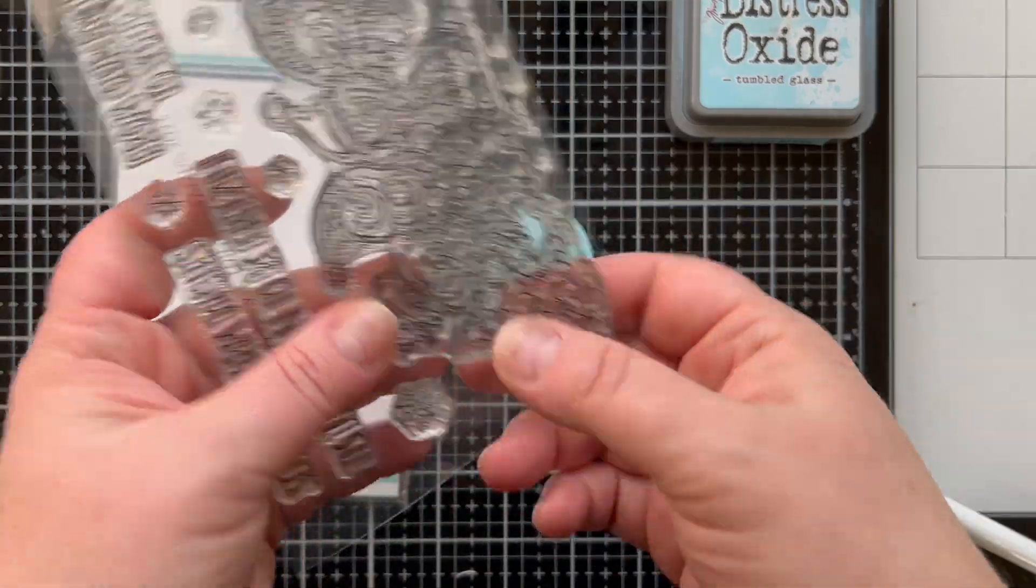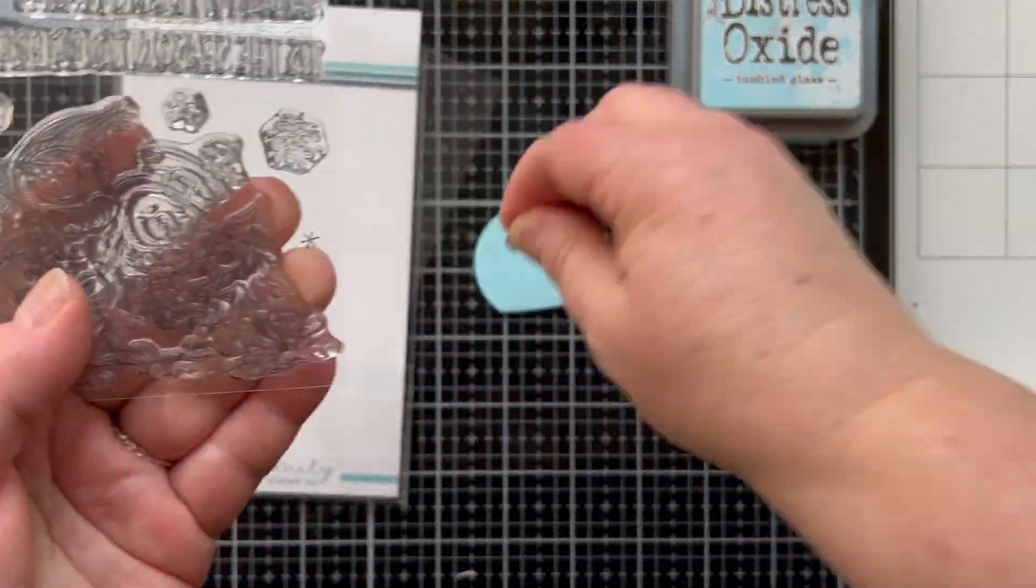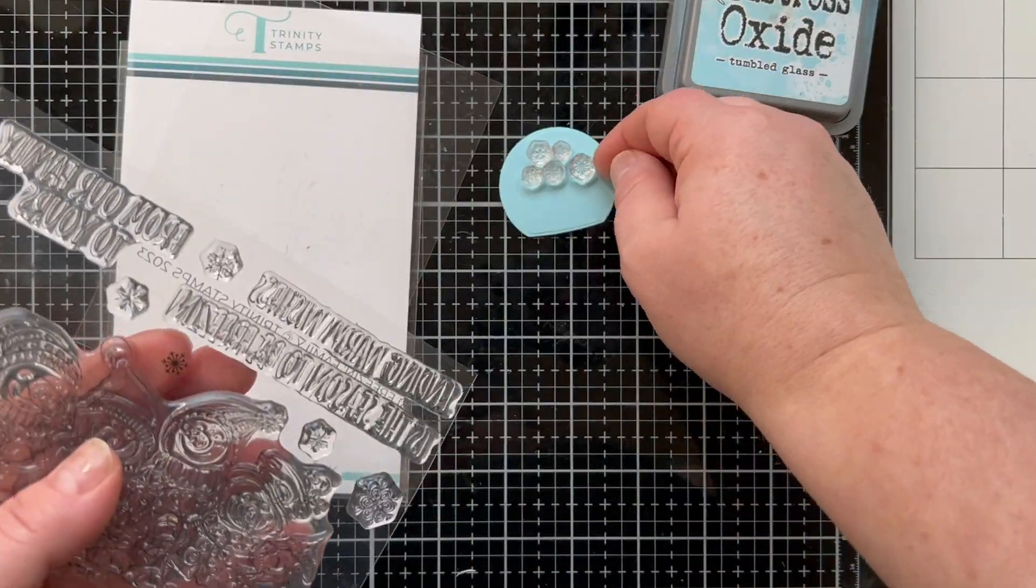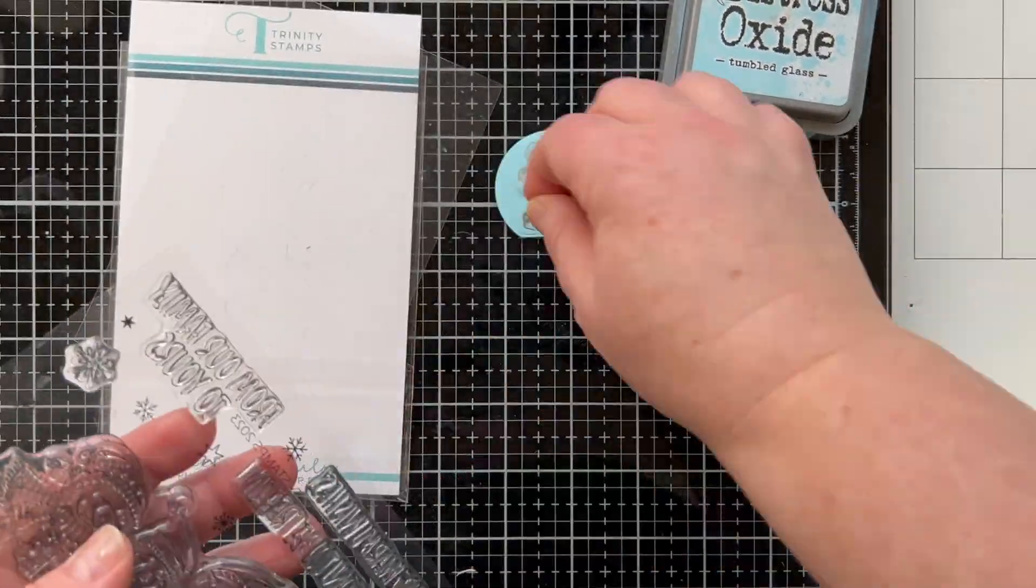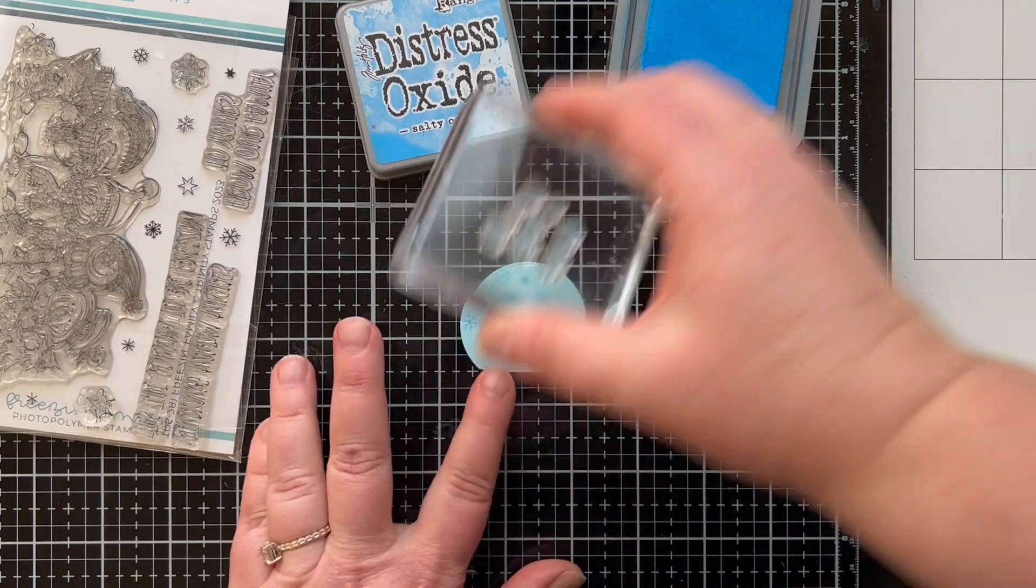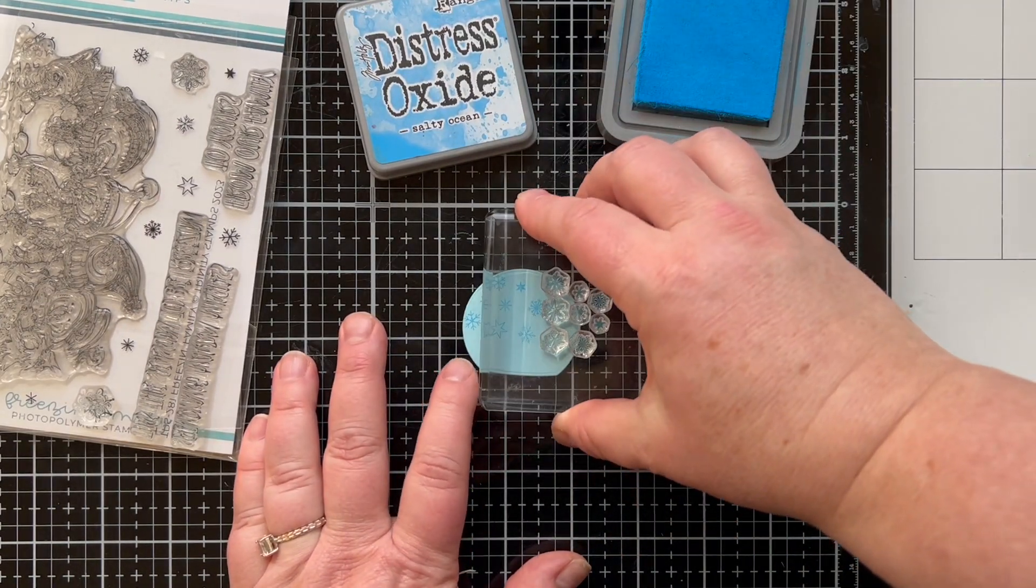Next we're going to create a card. I'm going to take a bunch of the snowflakes from this freezing family little stamp set. I love this set, I've used it so much.